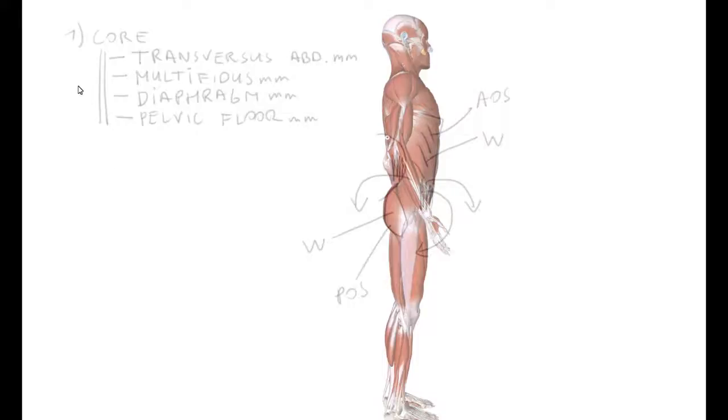These muscles should engage prior to any upper limb and lower limb movements. These muscles are constantly working. At the same time, posterior oblique system is constantly working as well, just to keep our posture erect. This brings us to point number two.